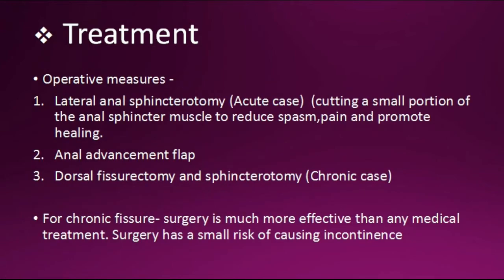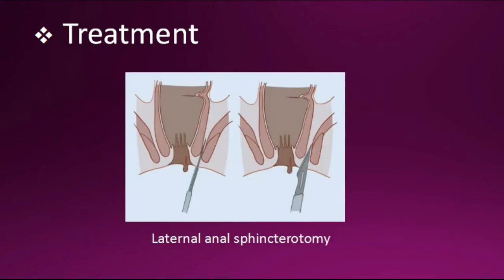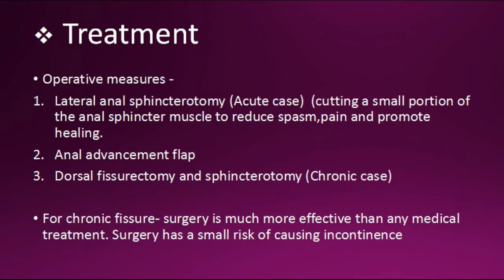Operative measures: lateral anal sphincterotomy is used in acute cases — cutting a small portion of the anal sphincter muscle to reduce spasm and pain and promote healing. Here you can see a picture of the procedure. For chronic cases, options include anal advancement flap, dorsal fissurectomy, and sphincterotomy.